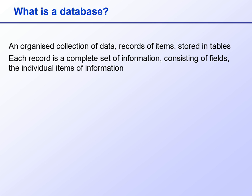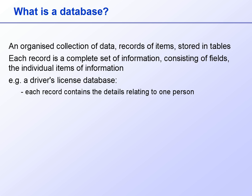To take a driving license database as an example, each record would contain all the details related to one person: that person's first name, last name, date of birth, driver license number, any motoring transgressions, etc.